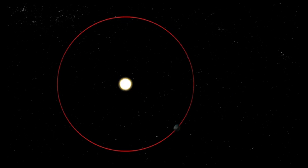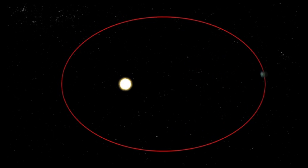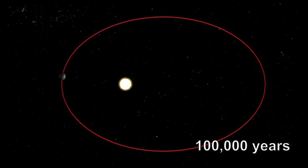The third is eccentricity, in which the shape of the Earth's orbit changes from nearly circular to more elliptical or egg-shaped over about 100,000 years.